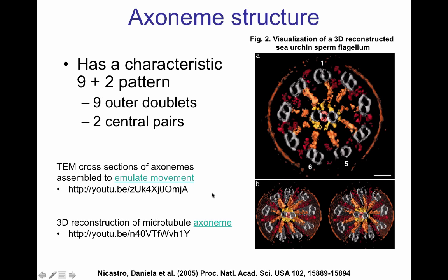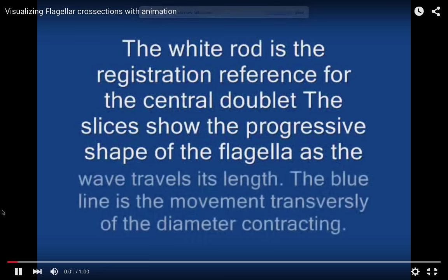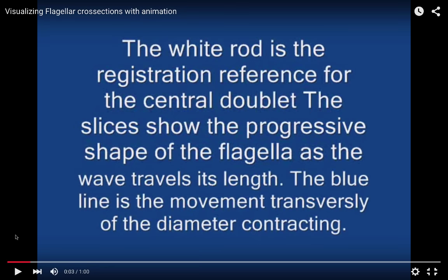What I'm going to show you now is a movie that takes cross sections from transmission electron microscopy and puts them together to visualize how the axoneme moves. They placed a white rod in the center of the axoneme to give the structure a reference, and then put colored structures around some of the external doublets. The slice shows a progressive shape of the flagella and how it moves with time.